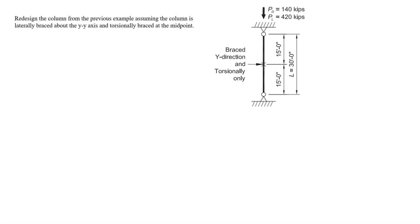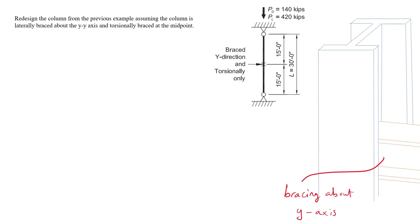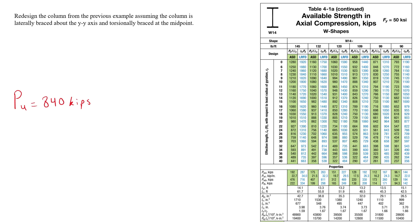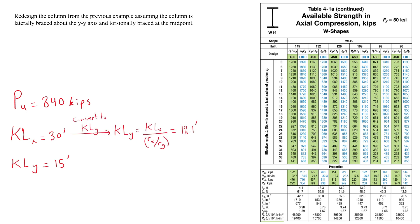In the next problem, we investigate how the previous design changes if the member is braced about the weak axis Y at mid-span. The ultimate load remains 840 kips, giving an effective length of 30 feet in the x-axis and 15 feet in the y-axis. Because the tables give strength only with respect to the effective length about the weak axis Y, we convert the x-axis effective length to an equivalent y-axis effective length by dividing by the ratio Rx/Ry from the bottom of the table. This gives an equivalent effective length of 18 feet in the y-axis, which is greater than 15 feet, so x governs.